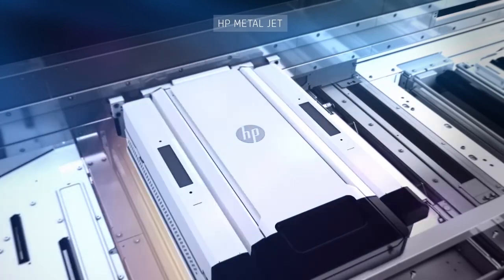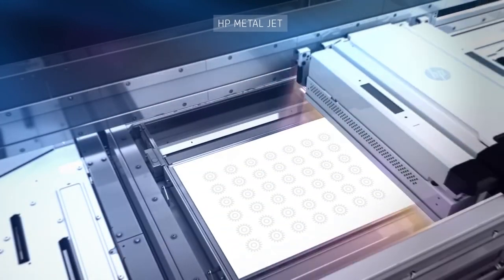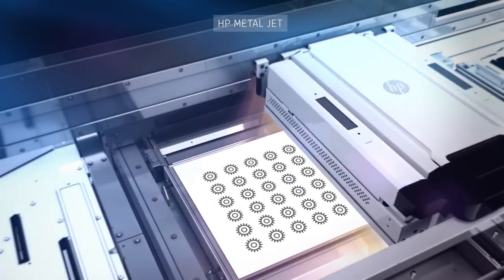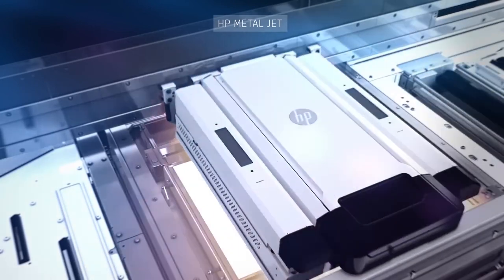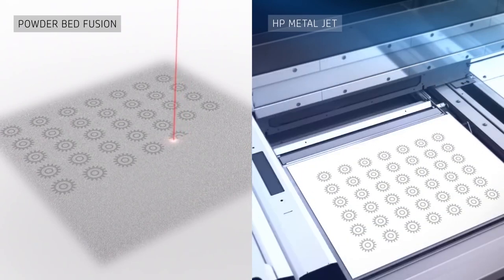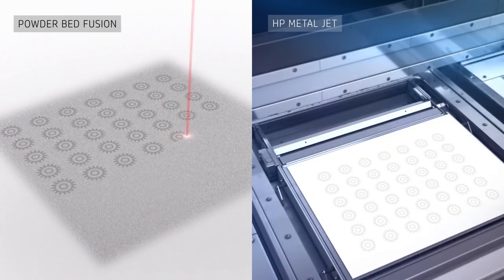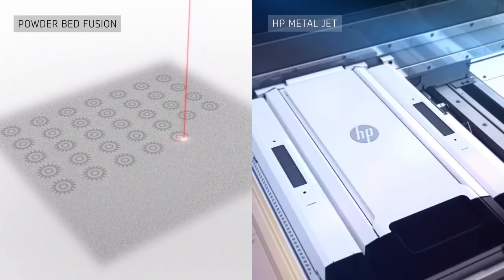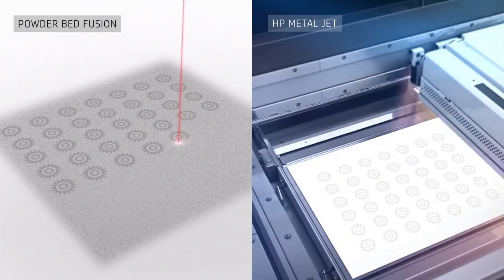HP MetalJet breaks through the productivity, quality and cost constraints of existing 3D printing technologies for metals. Compared to powder bed fusion, HP MetalJet produces more isotropic grain structure in the sintered part that results in more uniform material properties.